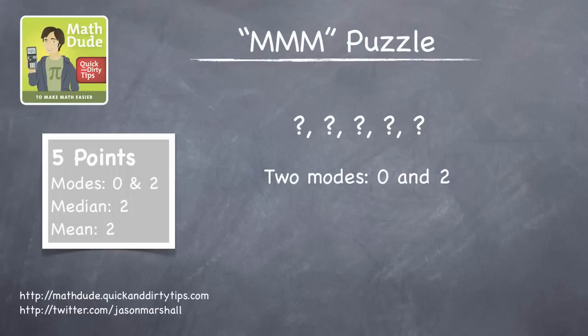In order to be a mode, there must be two or more of that number. So in this case, the set of five numbers has to have two each of 0 and 2. There can't be three of either, because then that number with three would be the only mode. So we already know four of the five numbers in our set: 0, 0, 2, 2.